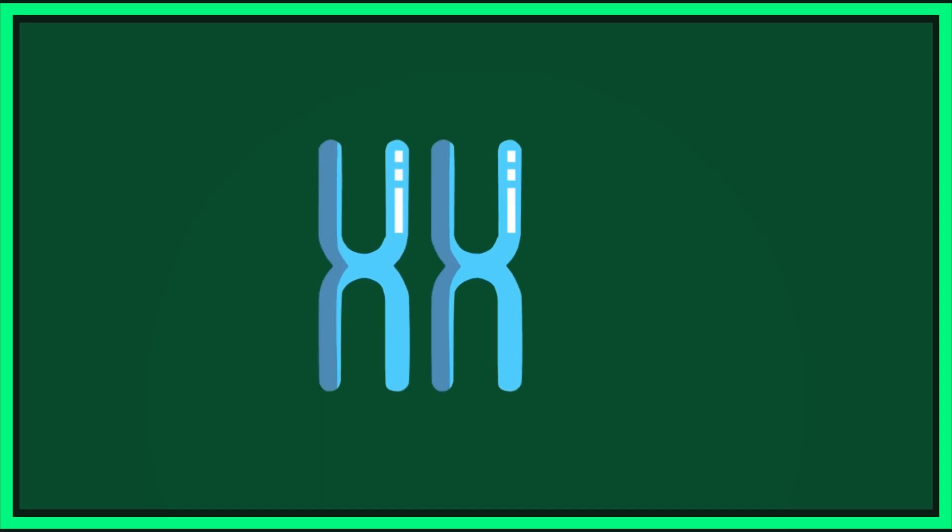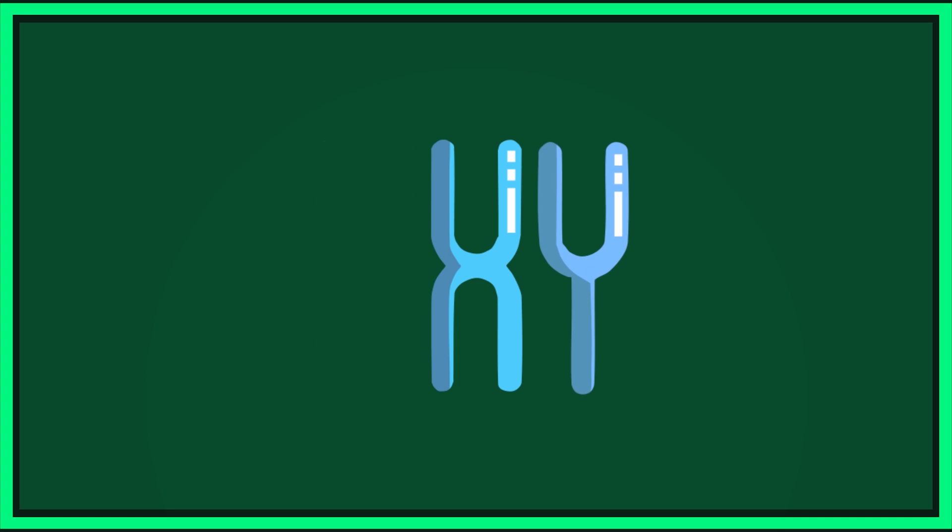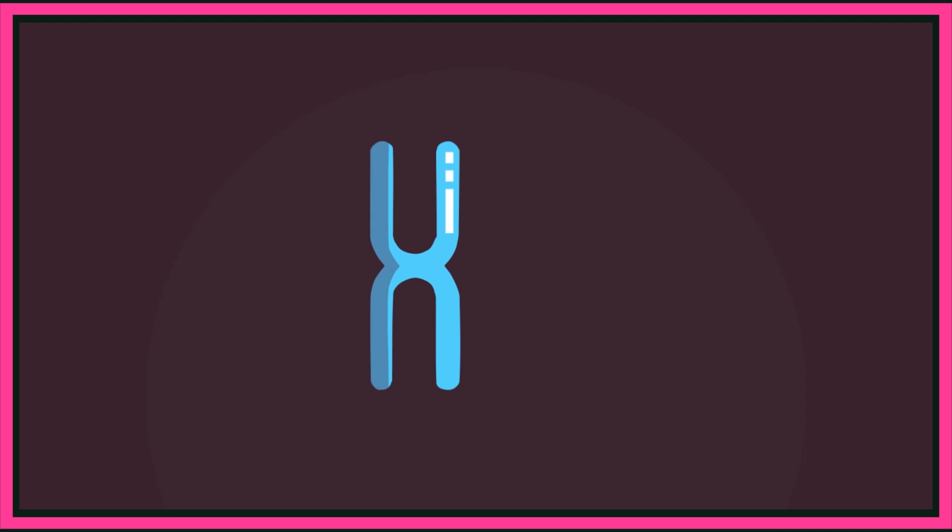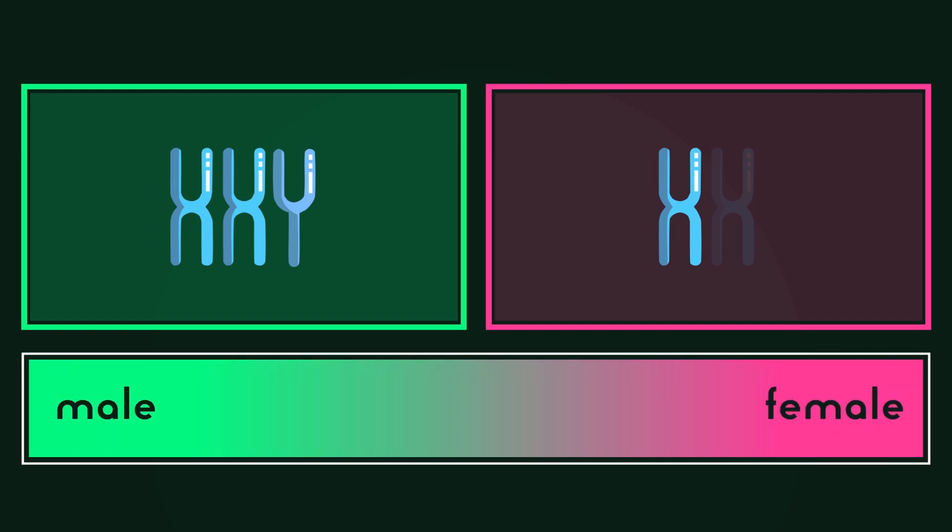For example, some males are born with two X chromosomes and one Y, as opposed to one X and one Y. And some females are born with only one X chromosome, as opposed to two. From this variation, gender theorists then conclude that sex category exists on a spectrum.